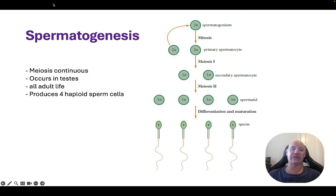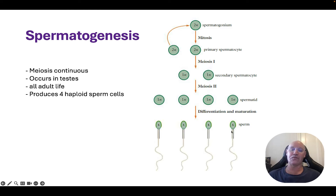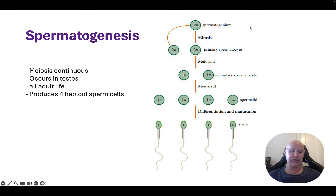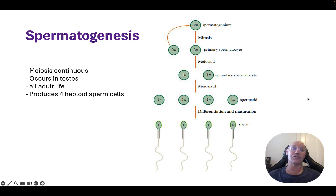Spermatogenesis first of all. You don't need to know this in any detail here. We have a process of meiosis 1 and meiosis 2 to produce our haploid cells, and as you can see, we have four sperm cells from every cycle of meiosis 1 and meiosis 2. This occurs in males as a continuous process, which I'm going to contrast with oogenesis in a moment.